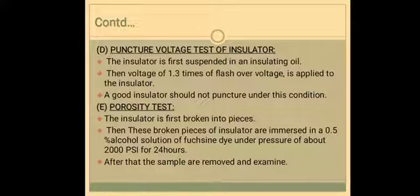Next is the porosity test. The insulator is broken and immersed in a 0.5 percent alcohol solution which will be under a pressure of 13,800 kN per meter square. The duration will be for 24 hours. The broken insulator will then be taken out and broken again — it should not show any sign of impregnation.